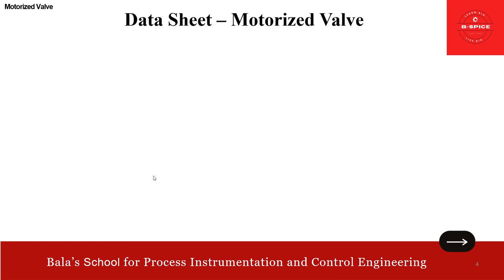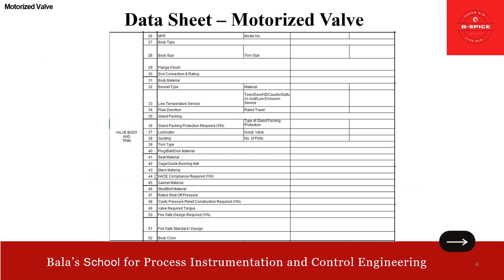Then we talk about the very important valve body and trim. Here also, a lot of resemblance between the control valve and the motorized valve. As usual: manufacturer and model number, body type, body size, trim size, flange finish, end connection and rating, body material, bonnet type and material, low temperature service, toxic service or low emission service if applicable, flow direction, rated travel, gland packing and gland packing protection, type of gland packing, lubricator requirement if any, isolation valve, guiding, number of ports, trim type.